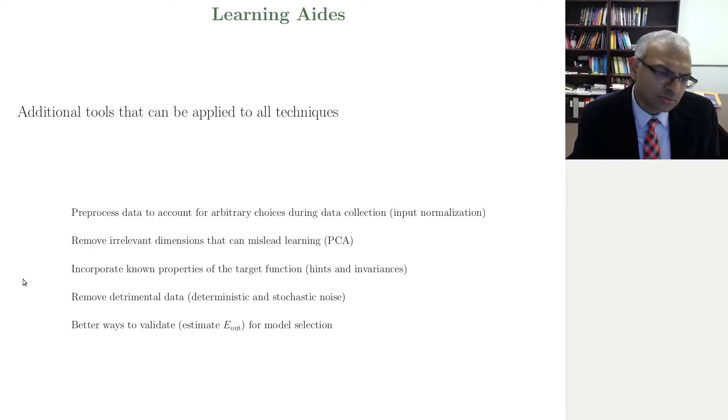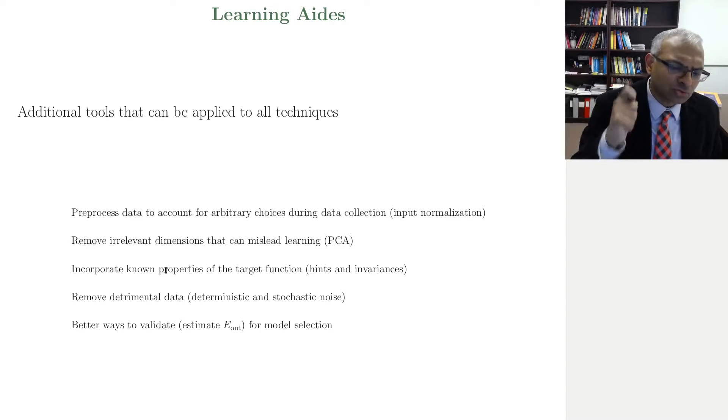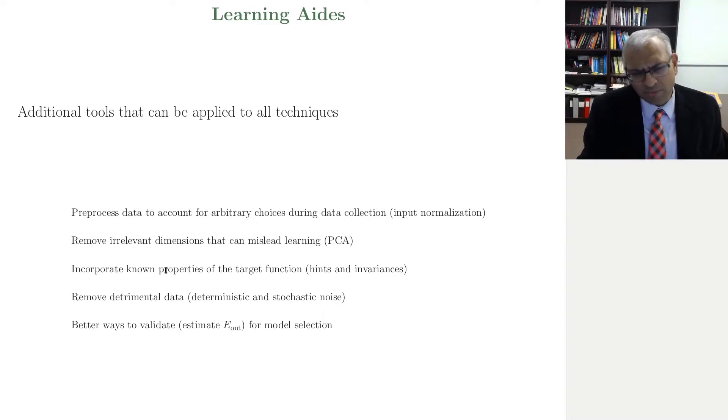Then we'll touch on other techniques that you can read more about in the literature and other textbooks - what are called hints and invariances. How do you incorporate known properties of a target function that may not be represented in the data? Another useful technique has to do with deterministic noise and stochastic noise, which we studied when we studied overfitting. If you can remove those kinds of noise, then you will overfit less. If you can remove detrimental data, it typically helps the learning. It's not the case that all data is good. If a particular data point is too complex or too noisy, you're better off removing it. Can we build techniques to remove detrimental data? I won't talk about that so much. You can read a little bit about it in the text.